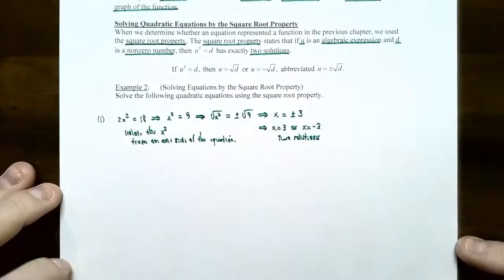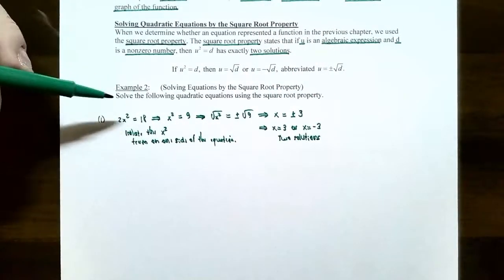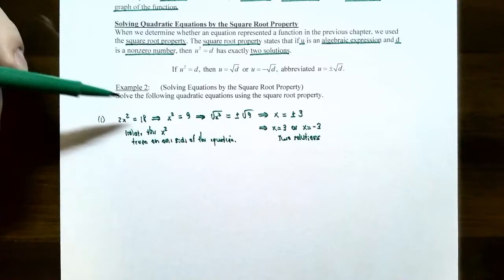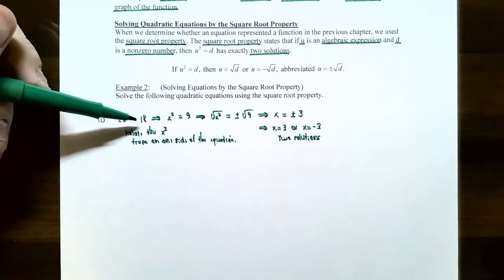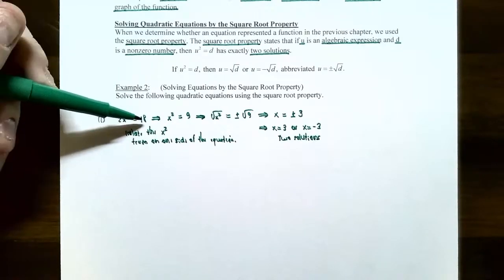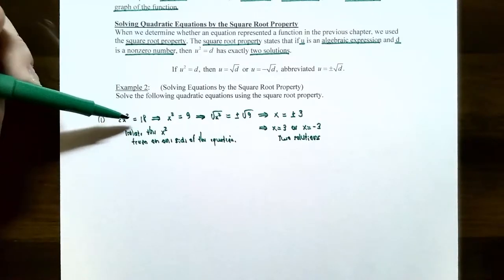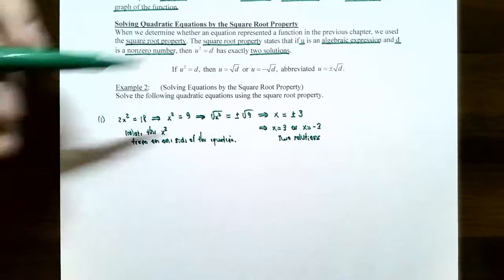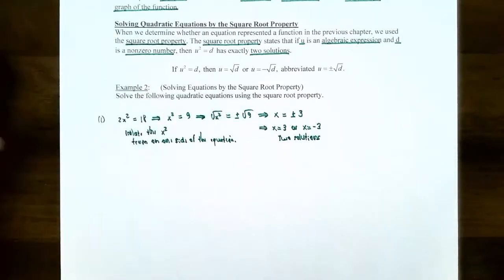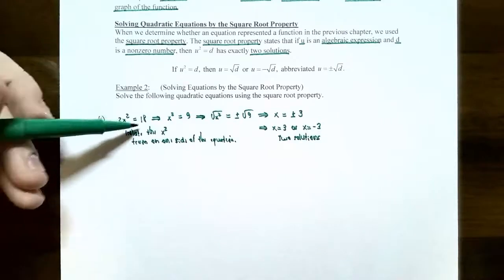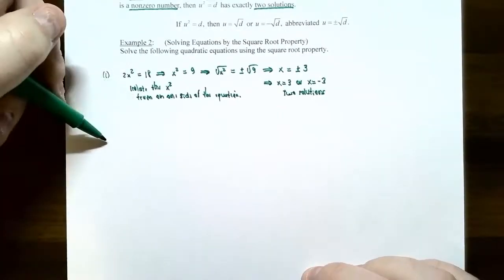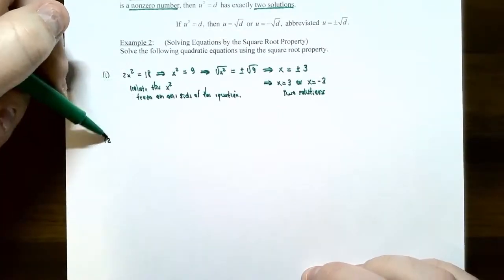Keep in mind that you could solve this equation using the factoring method — set one side equal to zero, factor out the GCF, and use the difference of squares formula to get the same answers. But the square root property might be a little bit faster in this case. Now that we know how the square root property works, let's try a different problem.